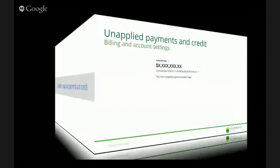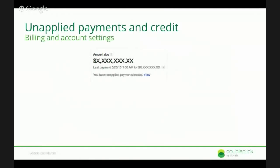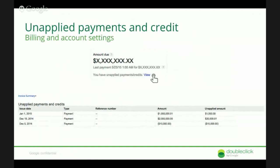You can check for payments and credits that haven't yet been applied to your account. If you've submitted payment or credit, it may not yet have been applied. Under the amount due, you'll see a link that says you have unapplied payments or credits. There's a link that says View — if you click on that, you'll get the information listed in the table below, where you can see the amount and the unapplied amount.